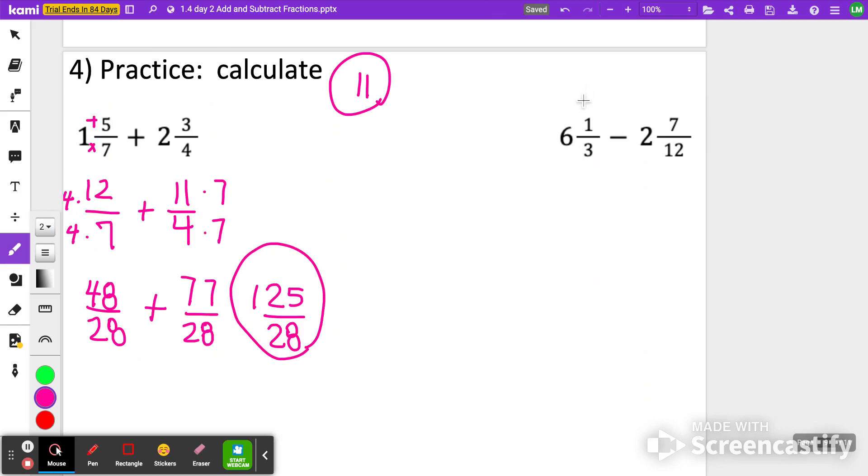Again, taking the time to change these mixed numbers over here into improper fractions, this first one, 6 and 1 third, I get 19 thirds. And 2 and 7 twelfths, that's 24 plus 7, that's 31 twelfths. Then I say about this one, 12 is a common multiple, so I only have to fix one fraction. 4 times 3 would give me that 12.